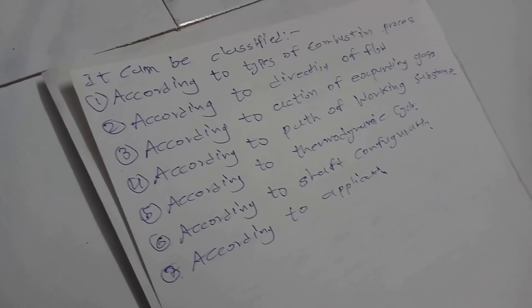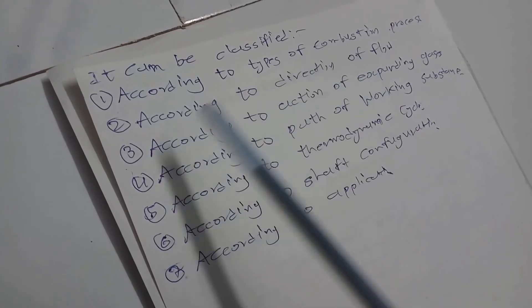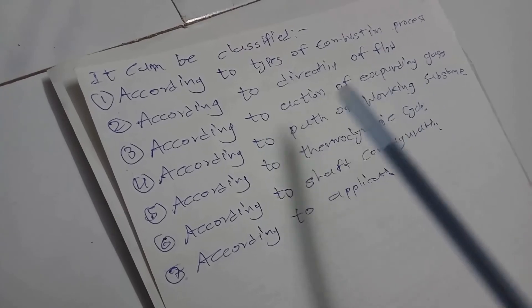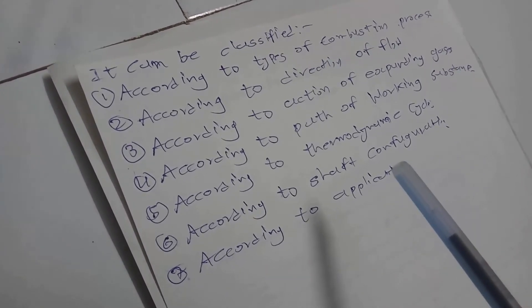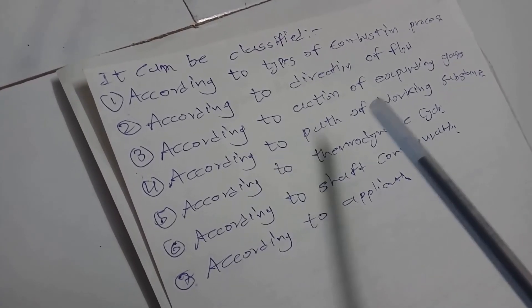Hello engineers, this is one mechanical engineer and today I will talk about classification of gas turbines. Gas turbines consist of a combustion chamber, compressor, and turbine. We can change the flow of air, the combustion type, and many other things, so we can classify gas turbines in several ways. A gas turbine power plant can be classified according to: types of combustion process, direction of flow, action of expanding gas, path of working substance, thermodynamic cycle, shaft configuration, and applications.